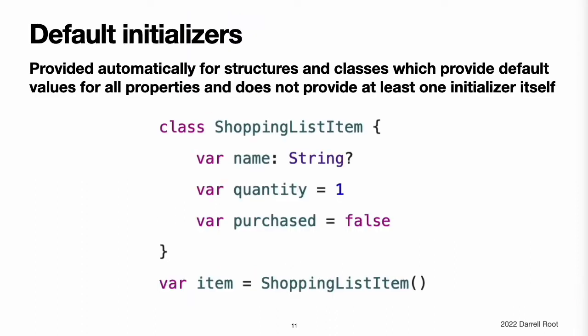Default initializers. Swift provides a default initializer for any structure or class that provides default values for all of its properties and does not provide at least one initializer itself. The default initializer simply creates a new instance with all of its properties set to their default values. This example defines a class called ShoppingListItem which encapsulates the name, quantity, and purchase state of an item in a shopping list.